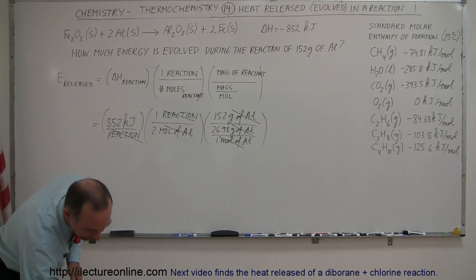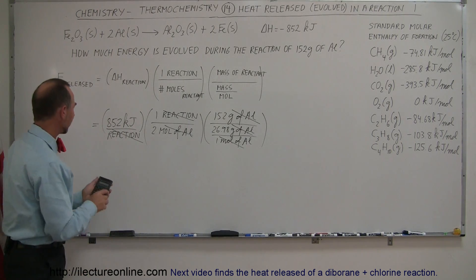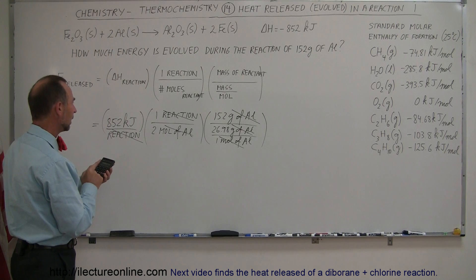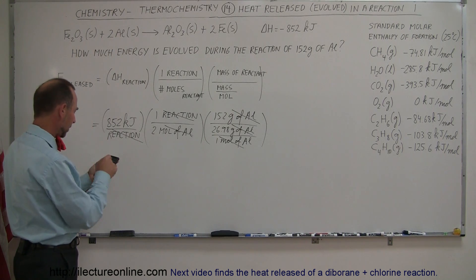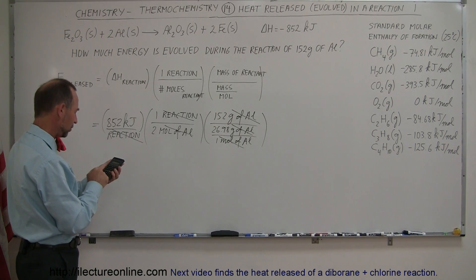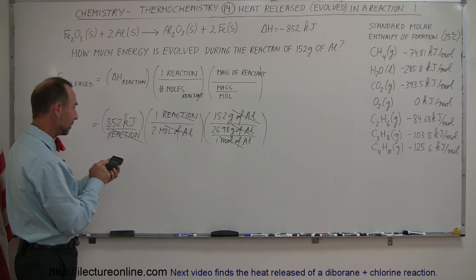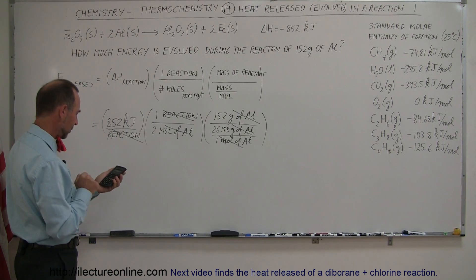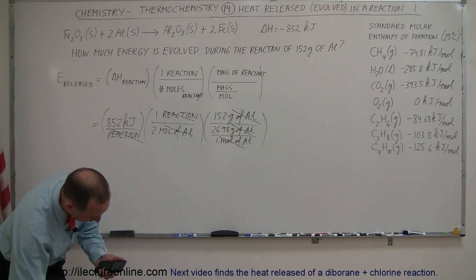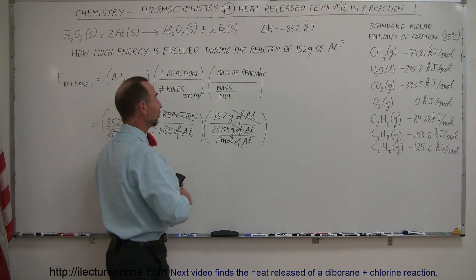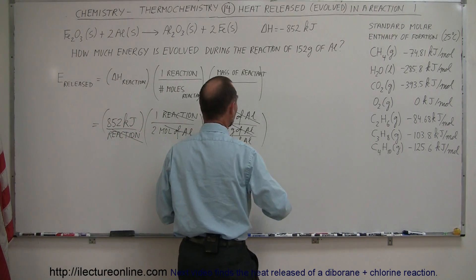Let's find out what that number is with our calculator. We have 852 divided by 2, times 152, divided by 26.98. We end up with exactly — wow, that's interesting — exactly 2,400 kilojoules.